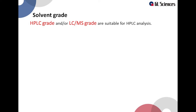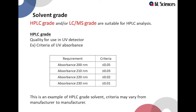Since using HPLC grade solvents would be a too simple explanation, we will go into more detail about the key features of HPLC grade solvents and the impact on your chromatography. The UV detector is the most common used detector in HPLC. Therefore HPLC solvents generally are of good quality to be used with a UV detector. As shown here, there are criteria of UV absorbance of your solvents at lower wavelength.